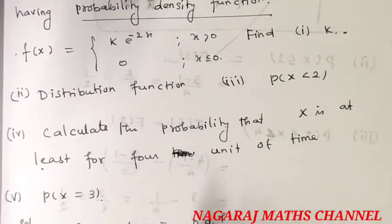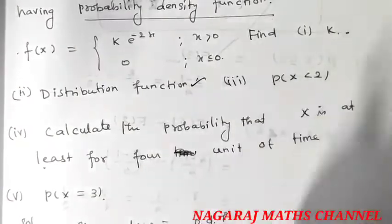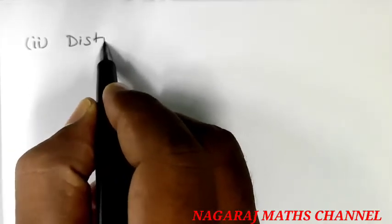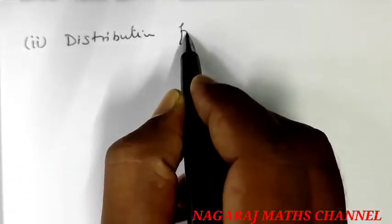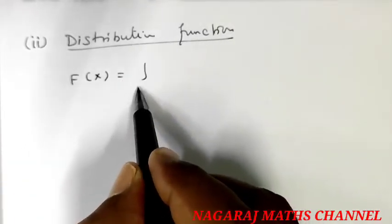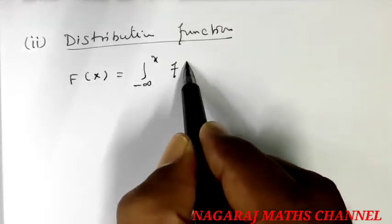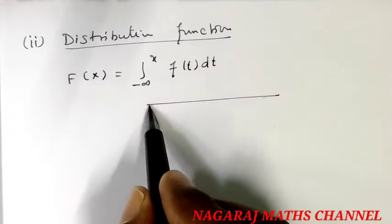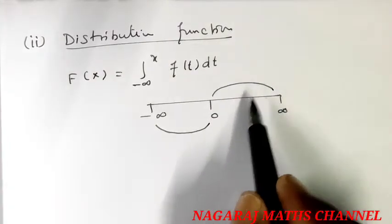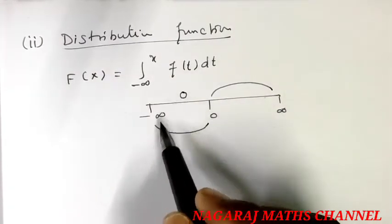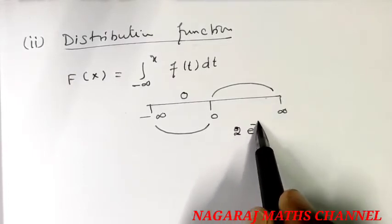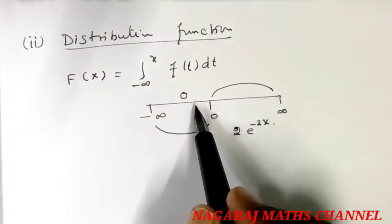Now let me find the distribution function. The distribution function F of x is the integral from minus infinity to x of f of t dt. We have two intervals, so there are two cases: minus infinity to 0 where f of t is 0, and 0 to infinity where f of t equals 2e to the power of minus 2t.